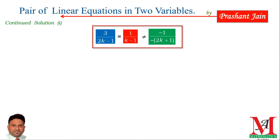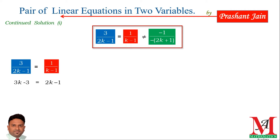The condition for no solution is on your screen: a1/a2 = b1/b2 ≠ c1/c2. On placing the values — putting the value of a1/a2, b1/b2, and c1/c2 — we start to solve the equation. First of all, we solve the first two parts, that is the blue and red one. During cross multiplication, we multiply 3 with (k−1) and 1 with (2k−1). Shifting 2k from the right hand side to the left hand side and −3 from left to right, and on simplifying, the value of k becomes 2.